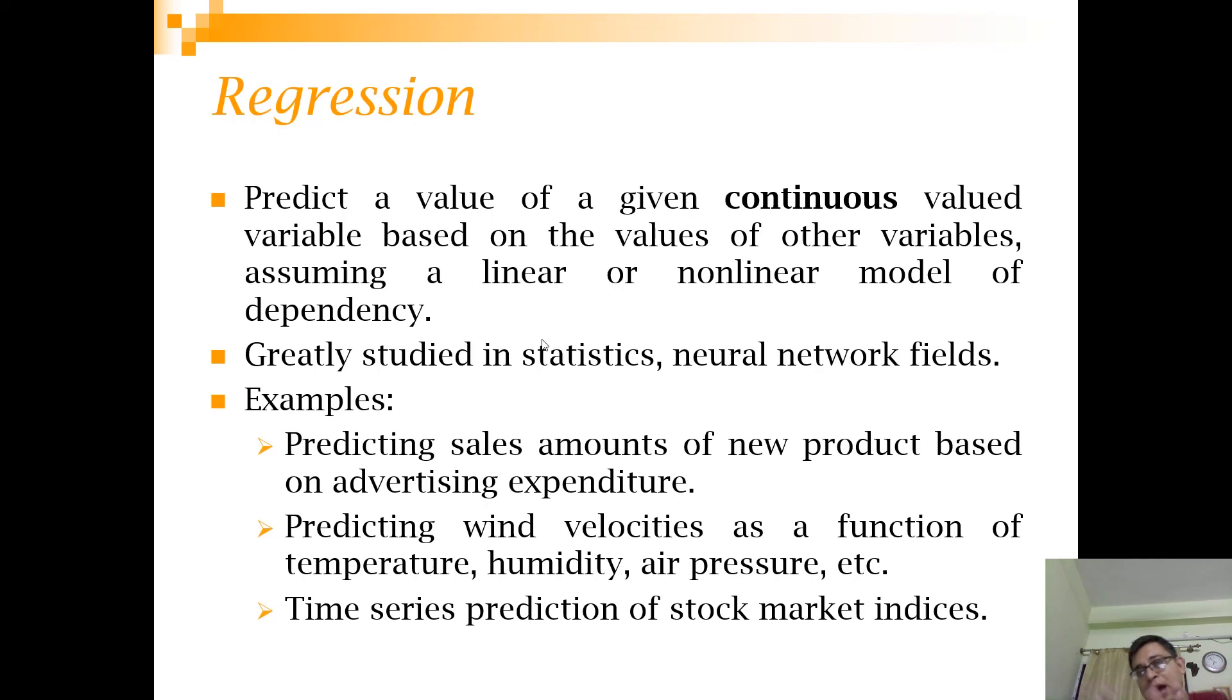Now what about regression? Regression has the same kind of input and output. You have the same series of independent variables and dependent variables. The most striking difference between classification and regression is that in regression, the output is a continuous valued variable. Here it is more like predicting sales amount of new product based on advertising expenditure, or predicting wind velocities as a function of temperature, humidity, air pressure. Time series prediction of a stock market index. So all these cases, the variable that we are predicting is of continuous nature.